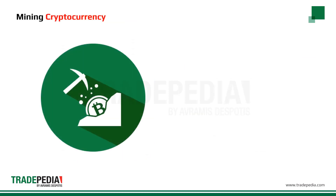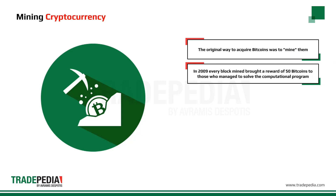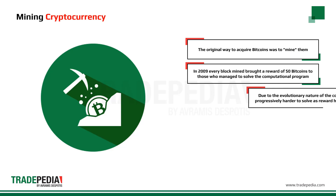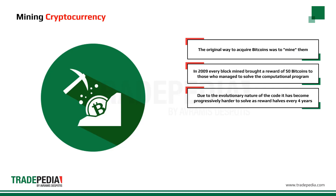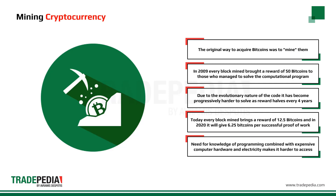There are three ways you can invest in cryptocurrencies: mining, trading in an exchange, and CFDs. The original way to acquire Bitcoins was to mine them. In 2009, every block mined brought a reward of 50 Bitcoins. Due to the evolutionary nature of the code, it has become progressively harder to solve, as the reward halves every four years. Today, every block mined brings a reward of 12.5 Bitcoins, and in 2020 it will give 6.25 Bitcoins per successful proof of work. The need for programming knowledge, combined with expensive hardware and electricity bills, makes mining inaccessible for the vast majority.